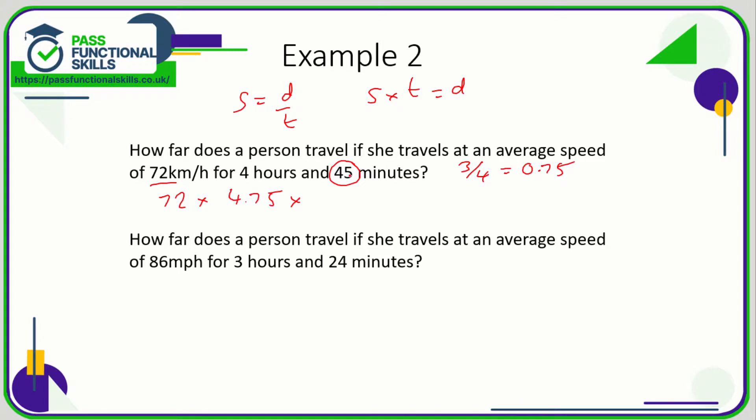Again, this is the stumbling block for lots of people. I know lots of people that will write 4.45, but the problem is that time is counted in units of 60 and so it doesn't fit into the decimal system, which is all about tens and hundreds. So 72 times 4.75 comes to a total of 342 kilometers.